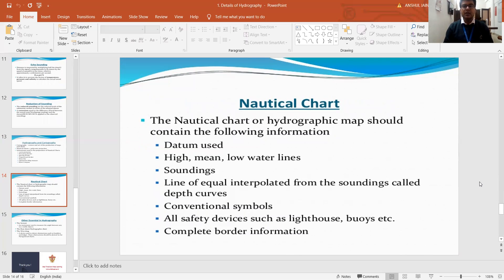Now what is the nautical chart? It is a type of hydrographical map which gives us the information highlighted. The datum used means what is the base level of the water surface we are considering. That information is given by the nautical chart. Then we have high, mean, and low water lines which are determined in terms of this nautical chart.